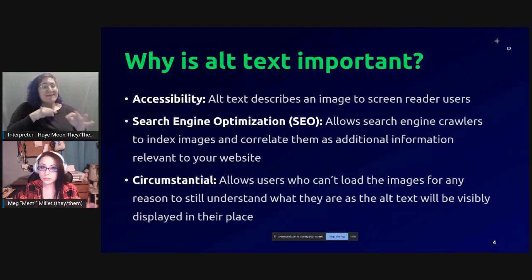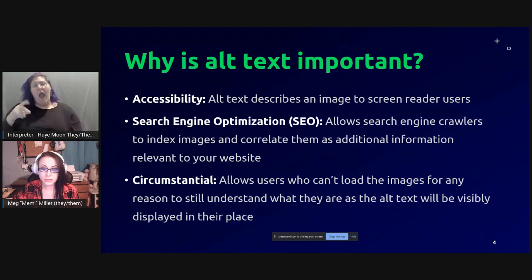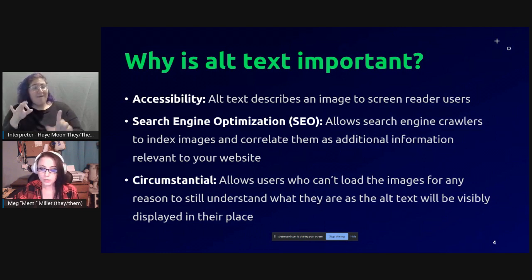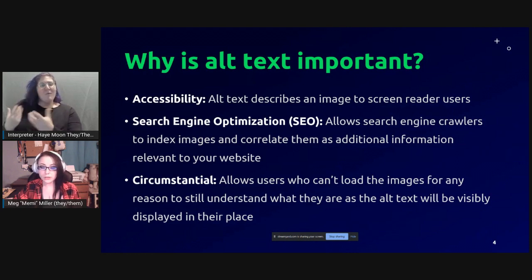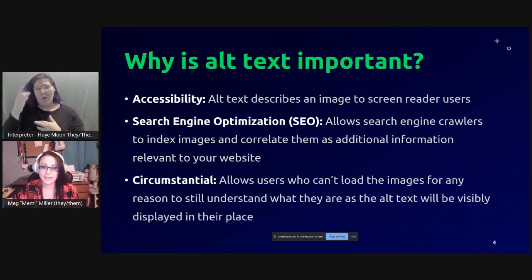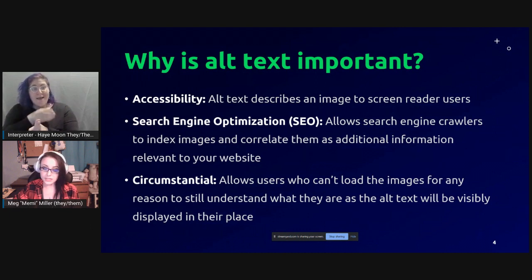Alt text is also important for search engine optimization, or SEO. Search engine crawlers index images through their alt text and categorize it as additional content relative to the information presented on the page. So if there were two websites with identical information, but one had alt text and one didn't, the one with alt text would rank higher in search engines. Alt text can also be useful circumstantially — when images won't load due to a slow connection or server issues, you may see that little icon with the text next to it, and that's the alt text.